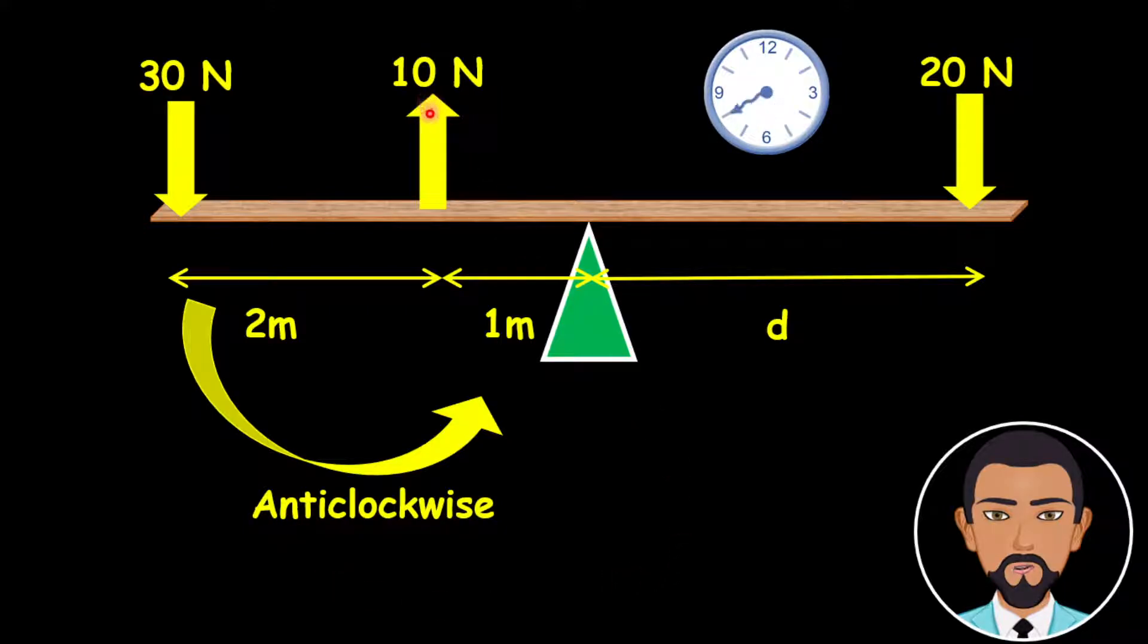Go to the 10 newtons. The 10 newtons will turn in that direction indicated by the orange arrow and it is going in the direction the way the clock is turning, and so therefore this is considered as a clockwise moment.